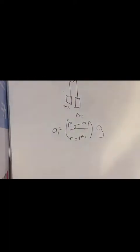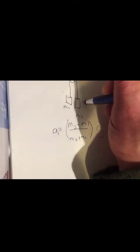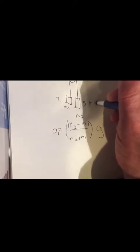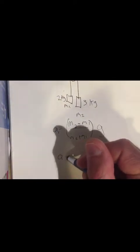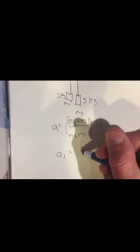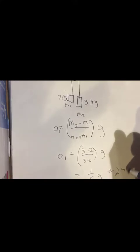And for instance, if m2 were 3 kilograms and m1 were 2 kilograms, then we would expect the acceleration of m2 would be downward and the acceleration of m1 would be upward. So the acceleration of mass 1 would be 3 minus 2 divided by 3 plus 2 times g, which is equal to 1 fifth g, or about 2 meters per second squared.